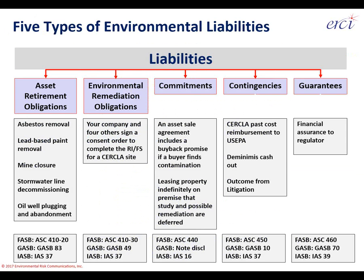Our take on environmental liabilities: under generally accepted accounting principles, which guide a lot of our work, there are five different types of environmental liabilities. Three major issuers of GAAP are FASB — the Financial Accounting Standards Board, covering U.S. companies and nonprofits — GASB, the Government Accounting Standards Board, covering state, county, and municipal governments, and IASB, the International Accounting Standards Board, a European-based accounting standards center.